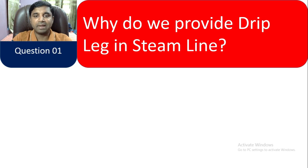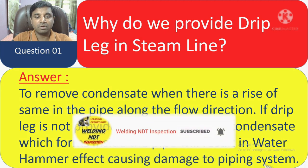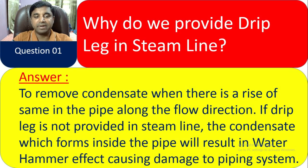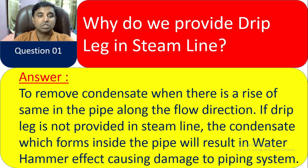Question 1: Why do you provide a drip leg in a steam line? The answer is to remove condensate when there is a rise in the pipe along the flow direction. If a drip leg is not provided in the steam line, the condensate which forms inside the pipe will result in a water hammer effect, causing damage to the piping system.